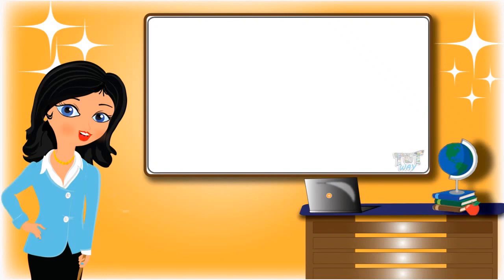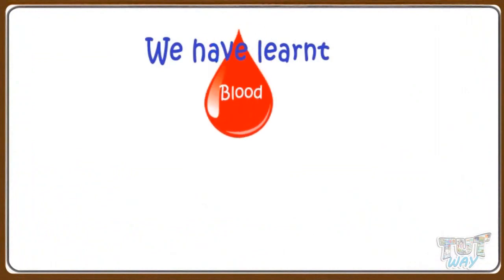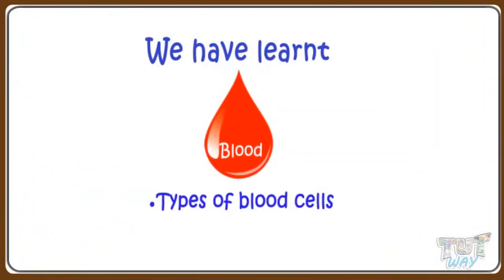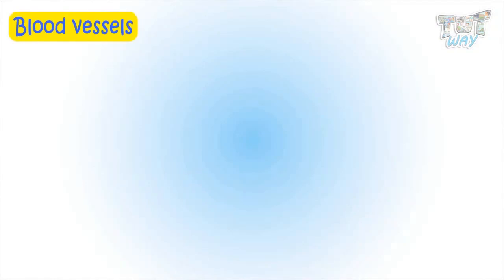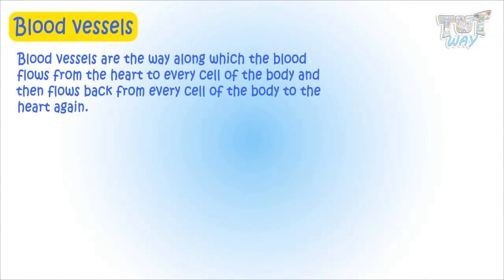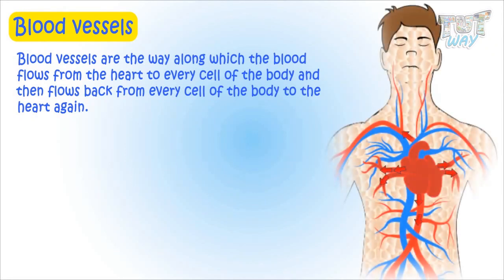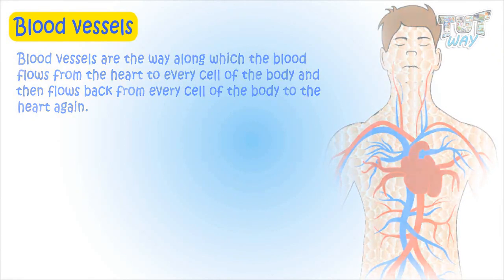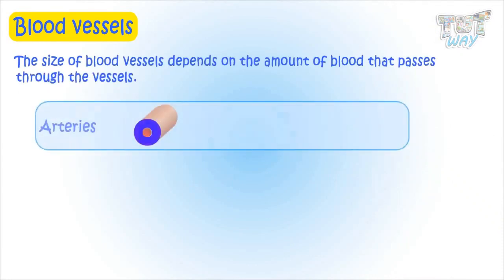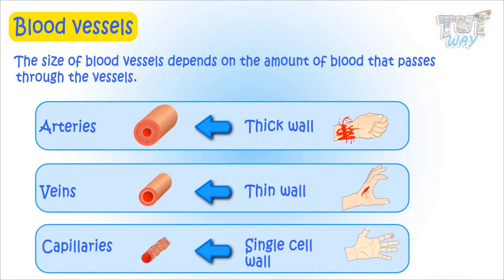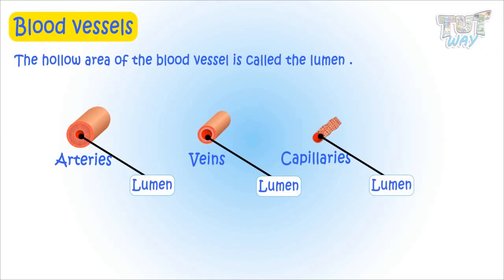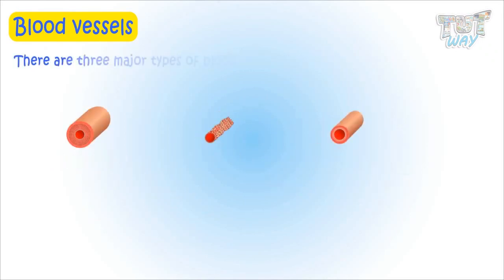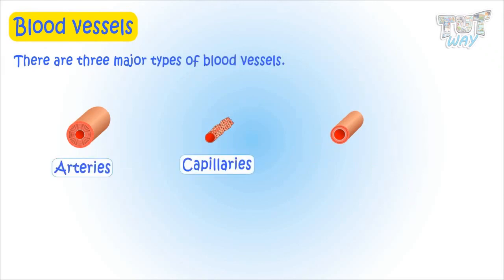Hi kids, today we will learn about the blood and the many types of blood cells inside the blood. Blood vessels are the pathways along which the blood flows from the heart to every cell of the body, and then flows back from every cell of the body to the heart again. The size of the blood vessels depends on the amount of blood that passes through the vessel. The hollow area of the blood vessel is called the lumen. There are three major types of blood vessels: arteries, capillaries, and veins.